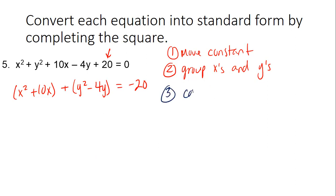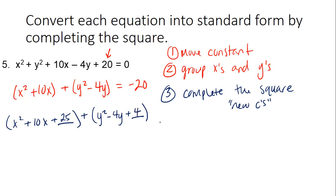All right. Step three is you're going to complete the square. And by completing the square, we're finding our new c's, right? So what are our new c's? So here I have x squared plus 10x. What does c see? 25. Good job. Plus y squared minus 4y plus what is its new c? 4. Good job. Equals negative 20. And what I did to the left, I have to also do to the right. So I have to add 25 and add 4.